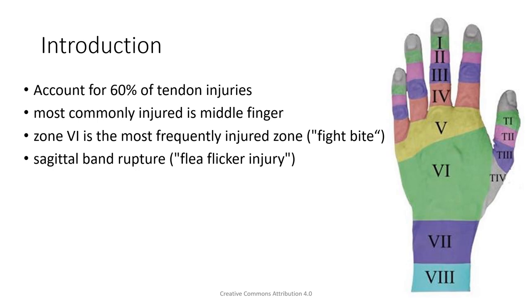The fight bite with the zone 5 injury in the extensor tendon from punching onto the incisor teeth, and things like the sagittal band ruptures that can occur. Being aware of the anatomy and the common injuries, you will find it easier to make assessments and understand the pathophysiology occurring in the injury or pathology in the extensor apparatus, how it is affecting function, and to provide a thorough assessment.